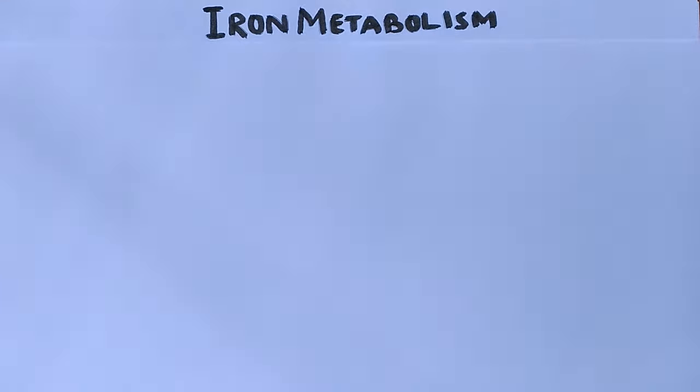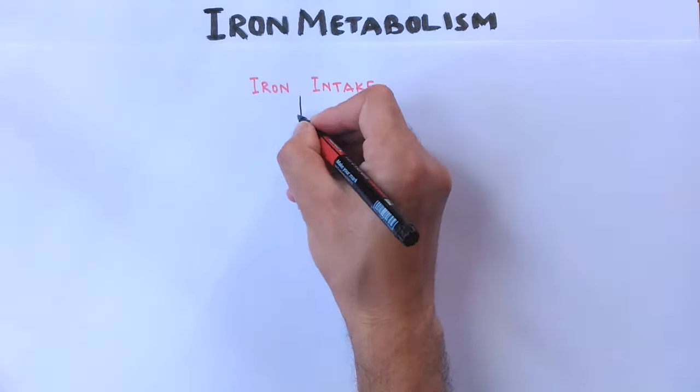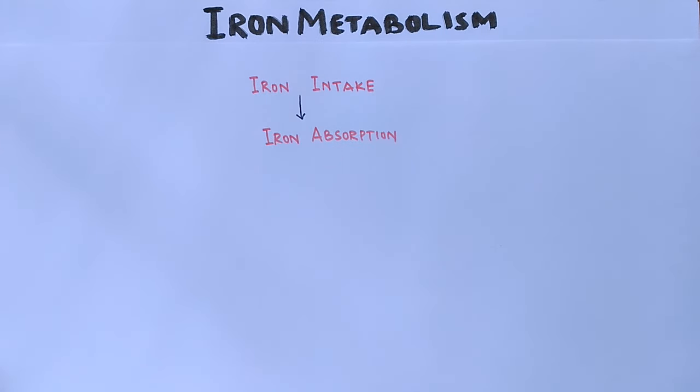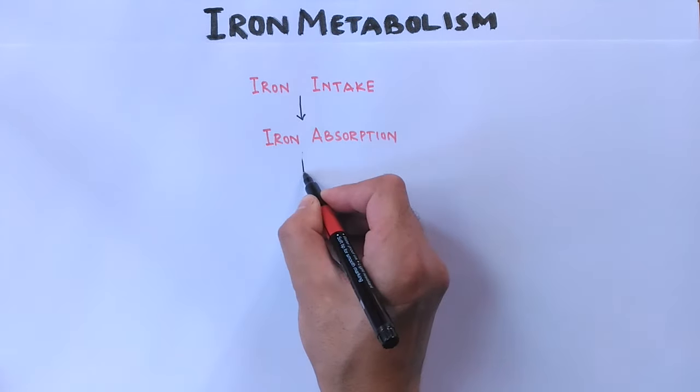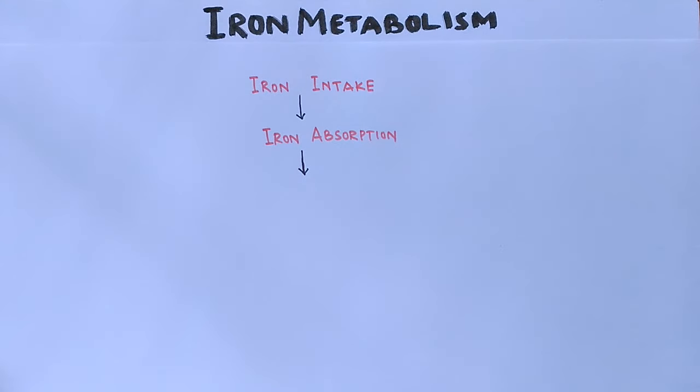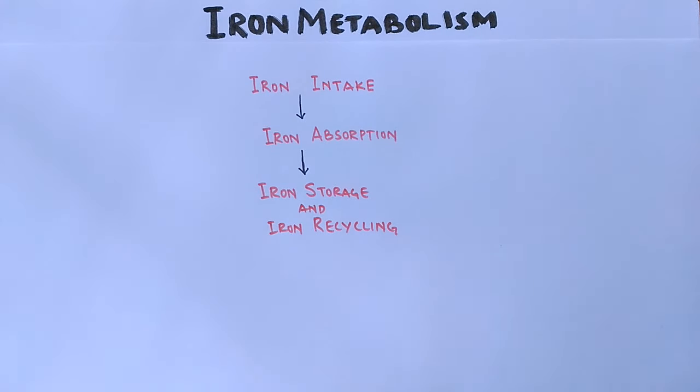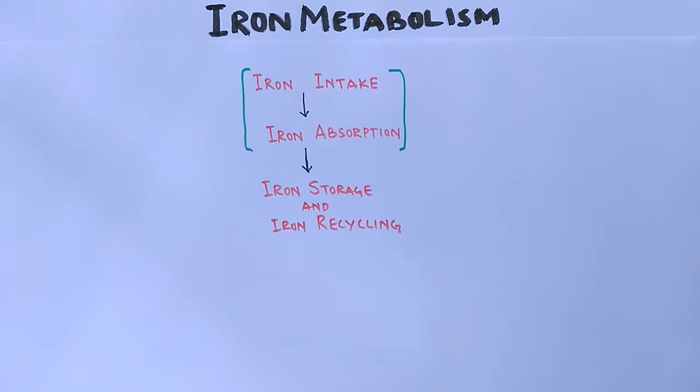First is the iron intake which we take through food, then it's followed by absorption of iron ions in the small intestine. The absorbed iron is either used in erythropoiesis or is stored. So this third step is storage and recycling.